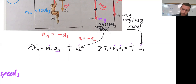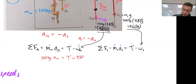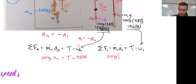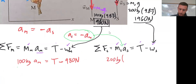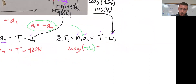So: 100 kilograms times the acceleration of the man equals the tension force minus 980 Newtons. On the other side: 200 kilograms times negative acceleration of the man equals the tension force minus 1960 Newtons. I substitute the negative acceleration of the man for the acceleration of the set, since that's what I was asked to find.